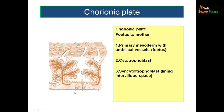Looking from fetus to mother in a cut section of the placenta: this is the chorionic plate on the fetal side and the basal plate on the maternal side. You can see the primary mesoderm with umbilical blood vessels, then the cytotrophoblast as a single layer of cells, and outer to it the syncytiotrophoblast, which lines the intervillus space between adjacent villi.